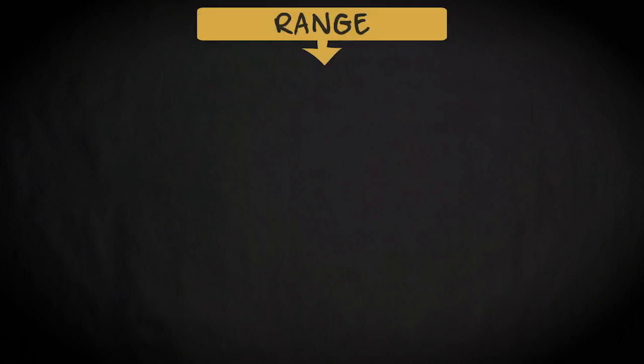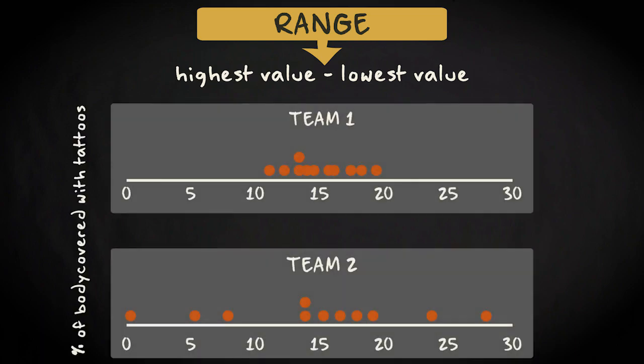The most simple measure of variability is the range. It is the difference between the highest and the lowest value. Let's look at our two teams again.